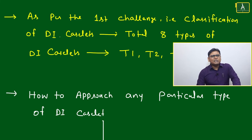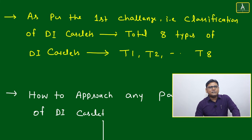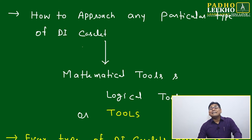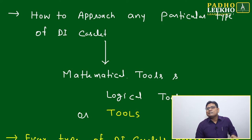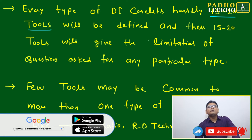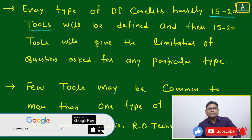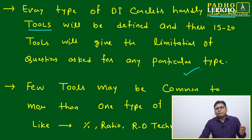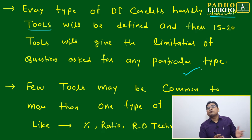For the classification challenge, there are a total of 8 types of DI case slates — T1 to T8 — as discussed in another Masterstroke. In this session, we discuss how to approach any particular type. If you find a case slate is T3, you know which tools to use — mathematical or logical. For every type of DI case slate, hardly 15 to 20 tools will be defined, and these 15 to 20 tools will give the limitations of questions asked for that type.